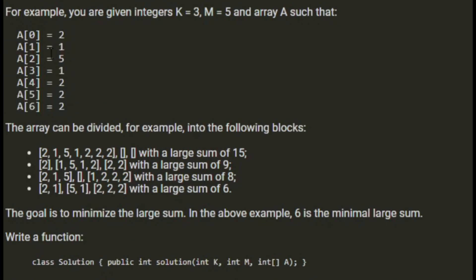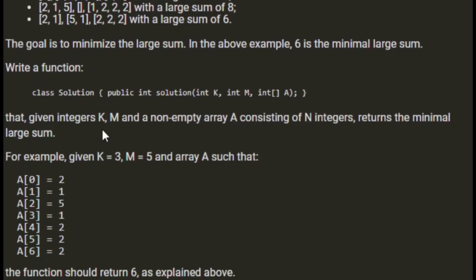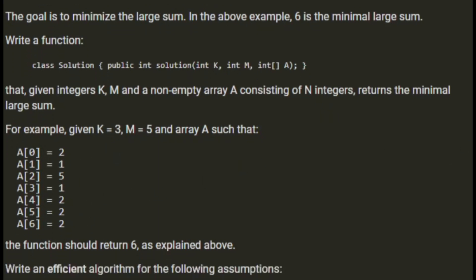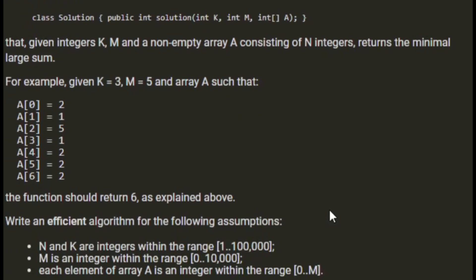That seems right because the answer needs to be at least 5. Write a function that, given integers k, m, and a non-empty array A consisting of n integers, returns the minimum large sum. For example, given k=3, m=5, and that array, the function should return 6. Write an efficient algorithm where n and k are integers between 1 and 100,000, m is an integer between 0 and 10,000, and each element of array A is in the range 0 to m.